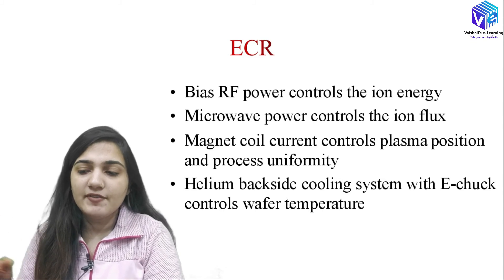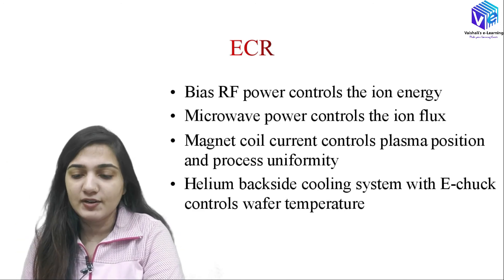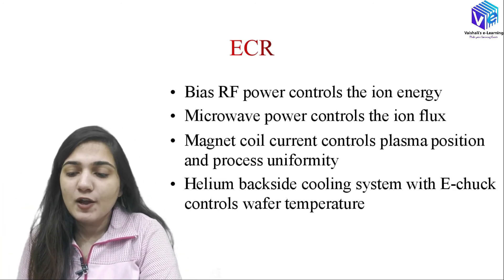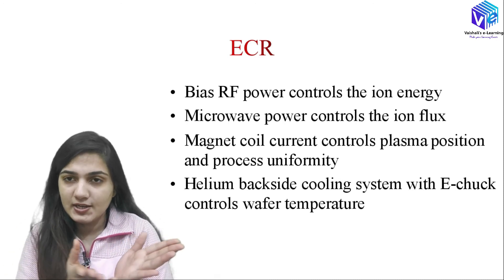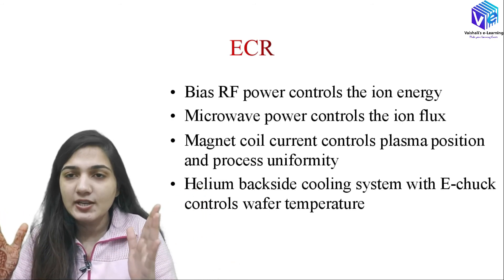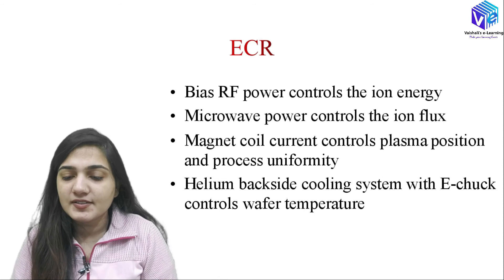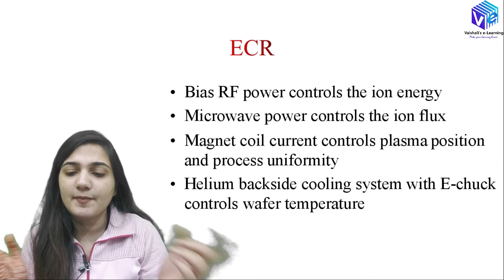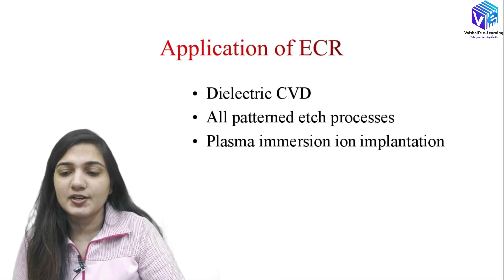In the ECR system, bias RF power controls the ion energy. The microwave power controls the ion flux — if I want to change the ion flux, I change the microwave power. The magnetic coil current controls the plasma position and process uniformity. By changing the magnetic coil current, the bending of the ions changes, allowing etching at different locations. The helium backside cooling system with the electrostatic chuck controls the wafer temperature.